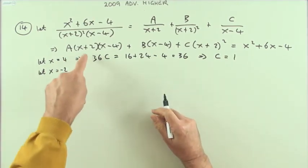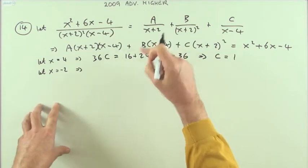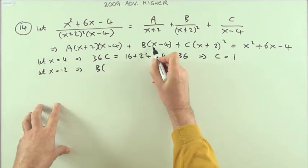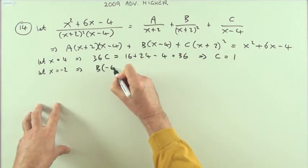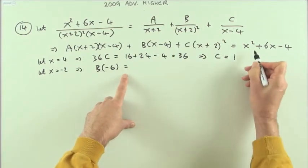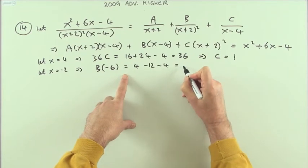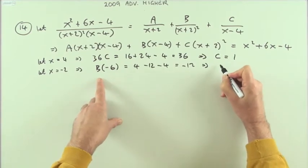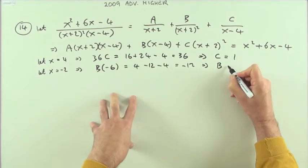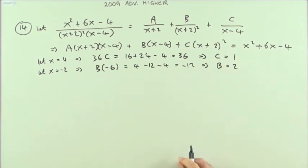Now another obvious knockout would be negative 2. Let x equal negative 2. Well, if x is negative 2, that goes, that goes, but I'm left with this one. So I've got b times (negative 2 and negative 4 makes negative 6), and on this side if x is negative 2, I've got a 4 but minus a 12 minus a 4, so that's negative 12.